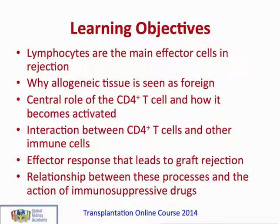By the end of this lecture, you should be able to recognise that lymphocytes are the main effector cells in the rejection process and understand why lymphocytes see allogeneic tissue as so foreign. You should appreciate the central role of a CD4 positive T cell and how it becomes activated and then how it interacts with other cells in the immune system. You should have a good understanding of the effector response that leads to graft rejection and the relationship between these processes and the action of immunosuppressive drugs.